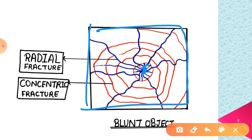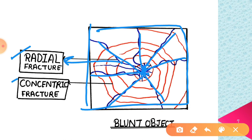You can see basically two types of fractures: radial and concentric fracture. The fractures which radiate outwards from the point of impact are termed as radial fractures. These types of fractures basically originate on just the opposite surface of the point of impact, or the external surface of the point of impact. Before understanding this further with an image, let us understand what concentric fracture is.